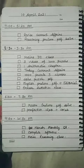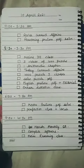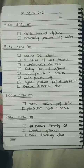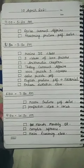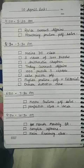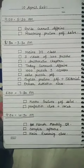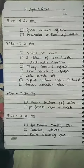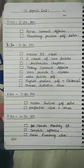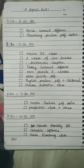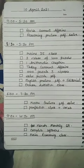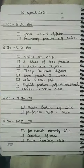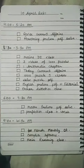Good morning everyone. Today is 10 April 2021 and here is today's daily to-do list. First, I will revise yesterday's current affairs because the things we read in the morning can be retained easily, so I will revise current affairs.